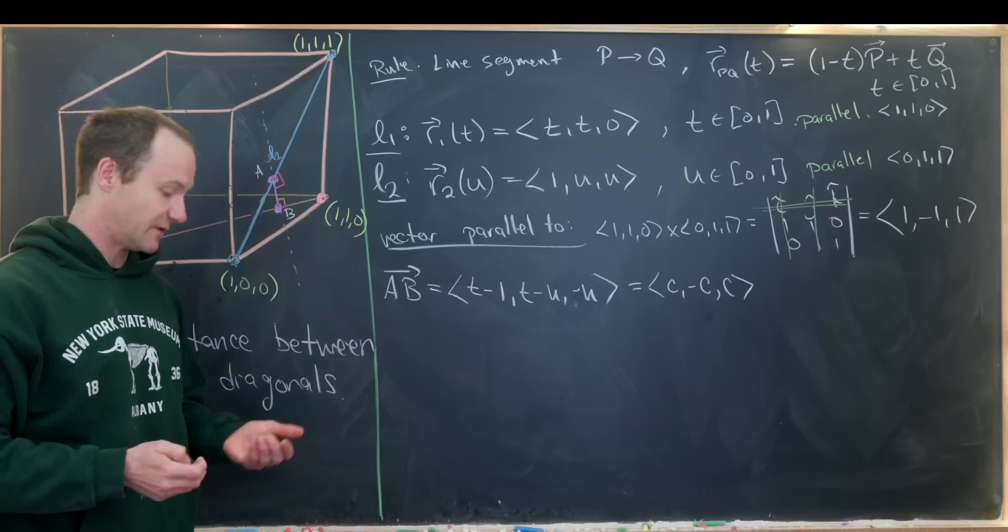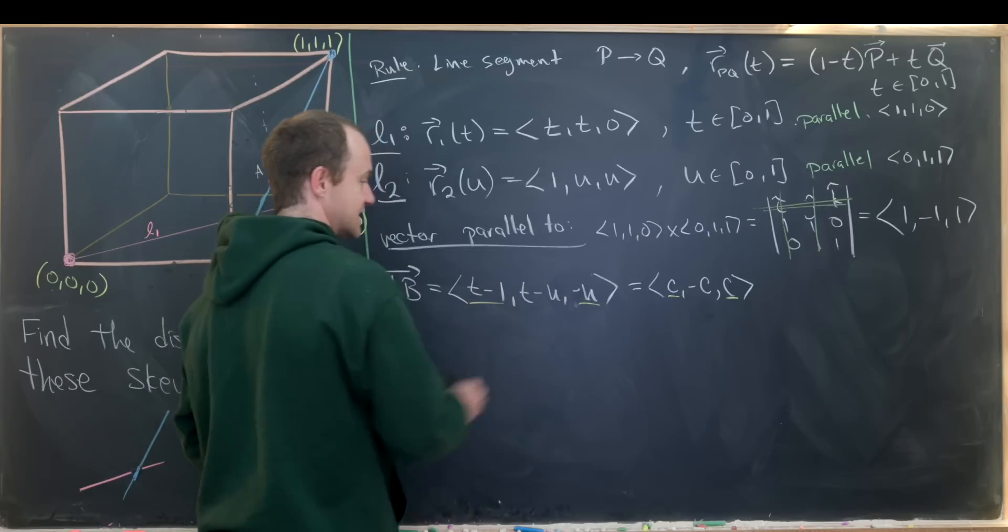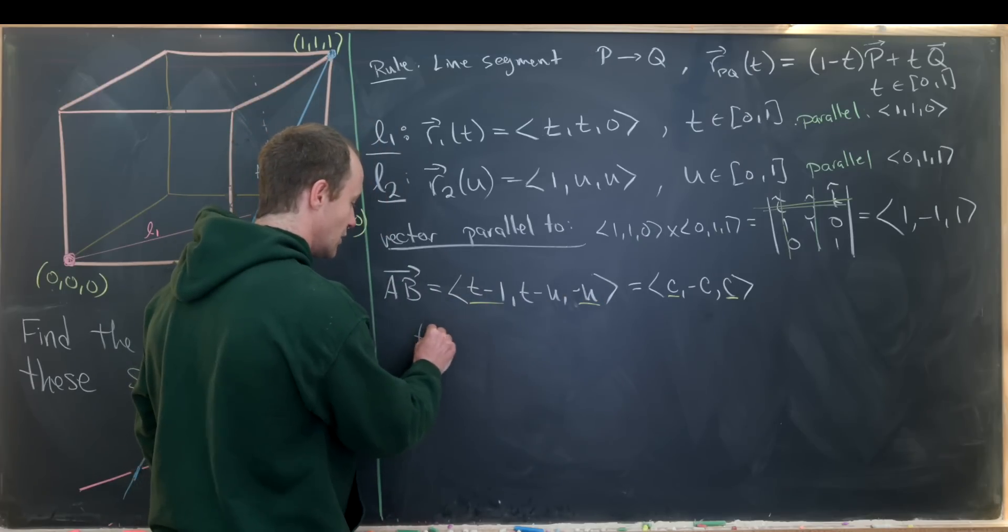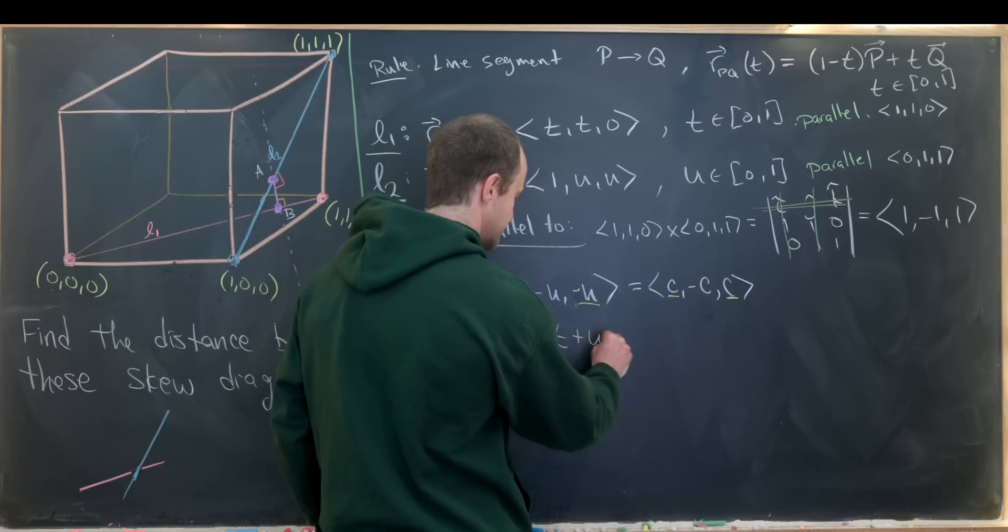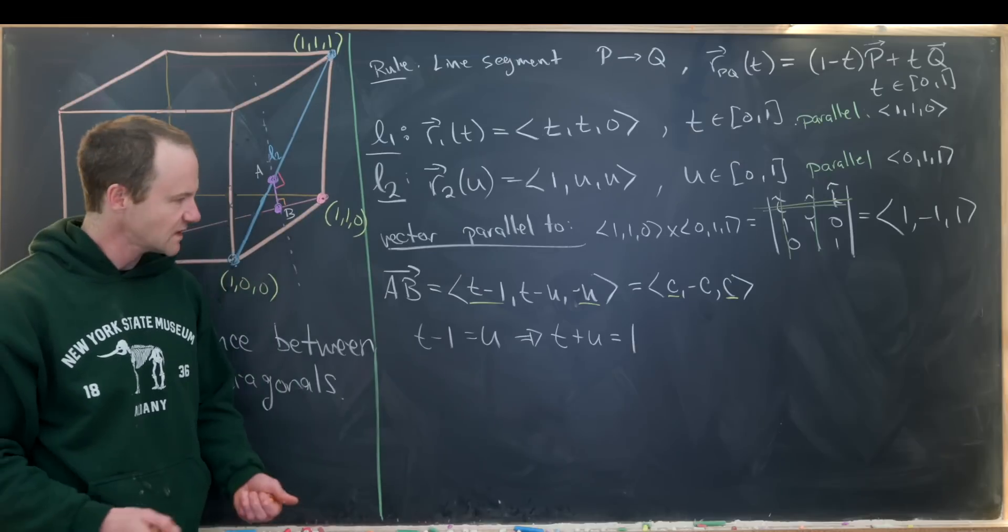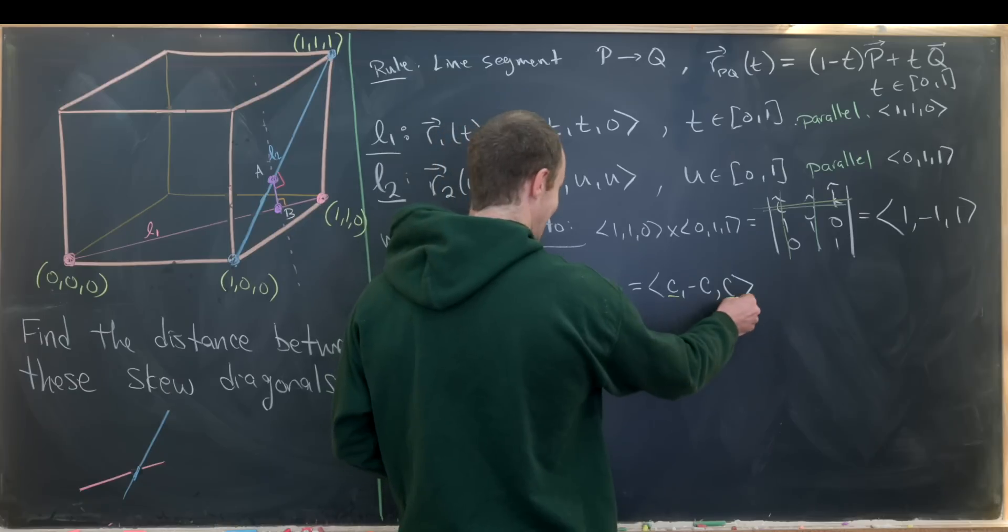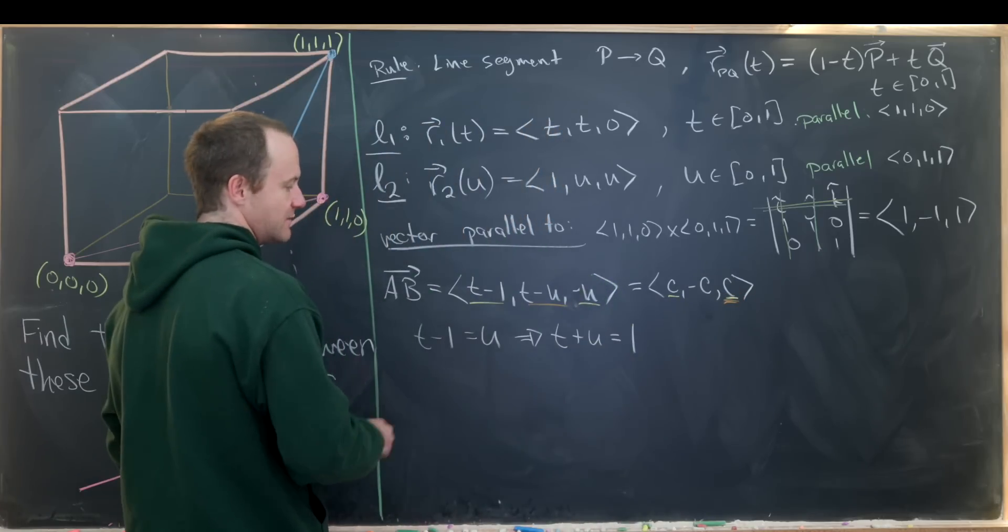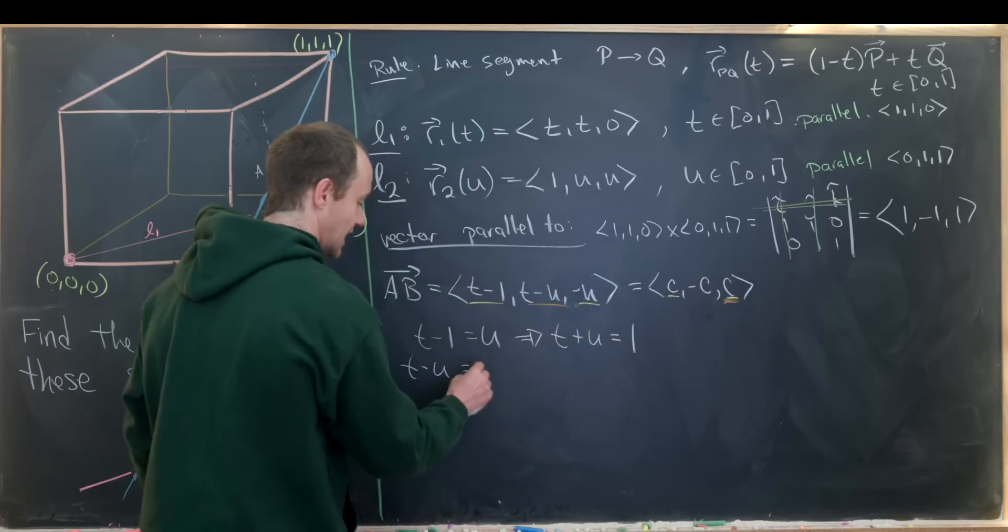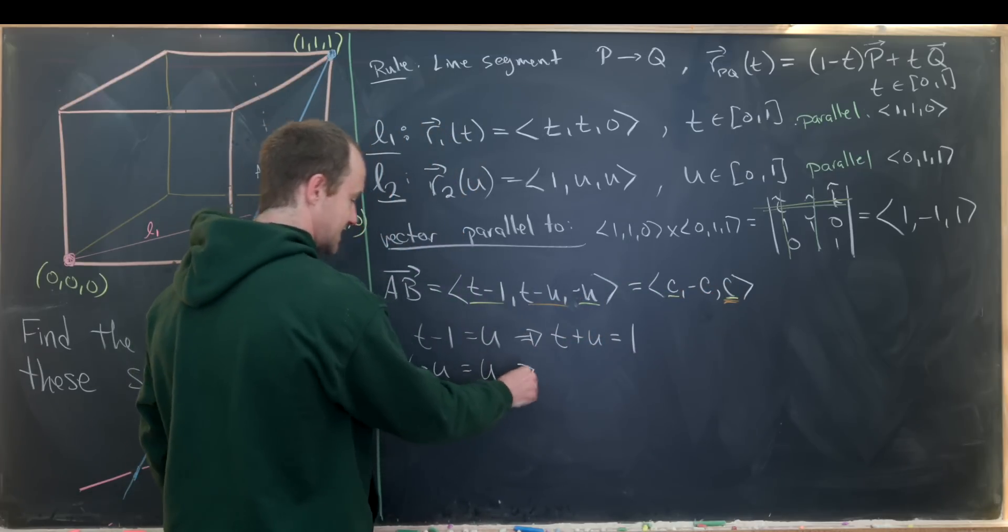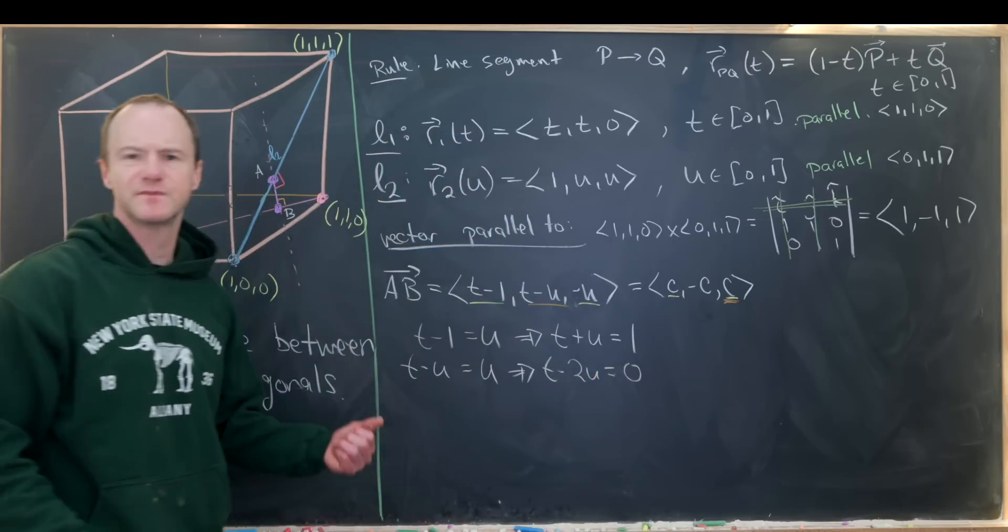But that sets up a system of equations. Notice we have this c is the same as this c. So that means t minus one is the same thing as minus u. That gives us our first equation. We have t minus one equals u, which we could maybe rewrite as t plus u equals one. And then let's see what else we have. We have this is the negative of this. So that means we could write t minus u is equal to negative c. But that'll be negative negative u, which is u. And so that sets up t minus two u is equal to zero. So something like that. And now we've got a system of two equations and two unknowns. We can solve for the appropriate parameters.